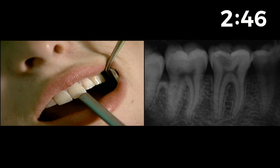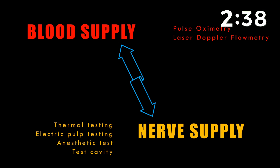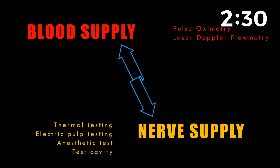Whenever we are having a doubt, we should go for one of the pulp vitality tests. The true vitality testing is to check the pulpal blood supply — which includes pulse oximetry and laser Doppler flowmetry — but these are still in a very rudimentary stage of development and not clinically feasible.